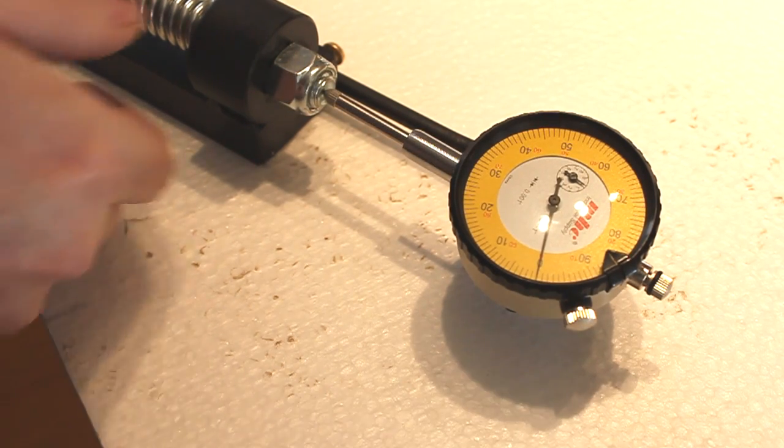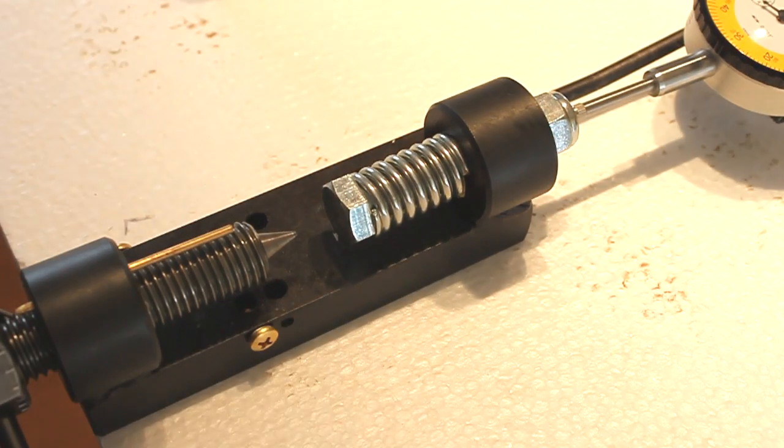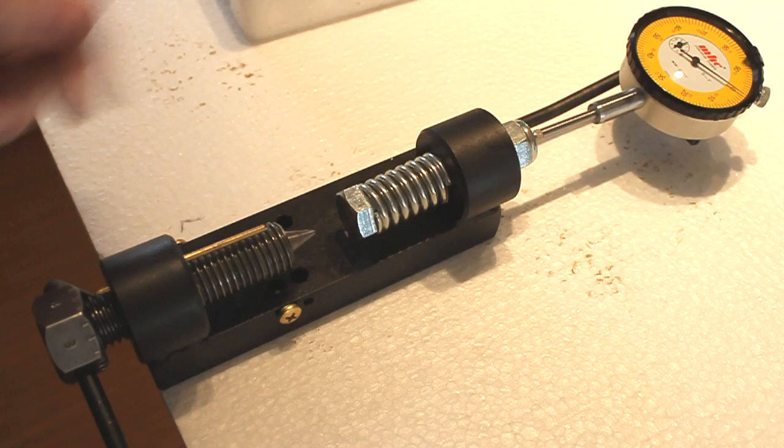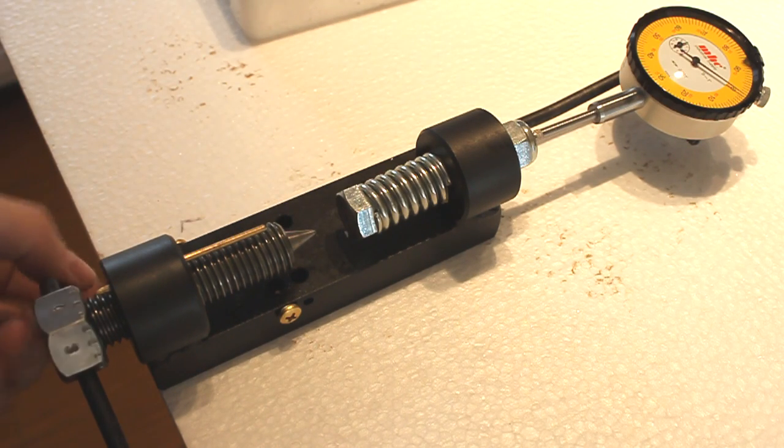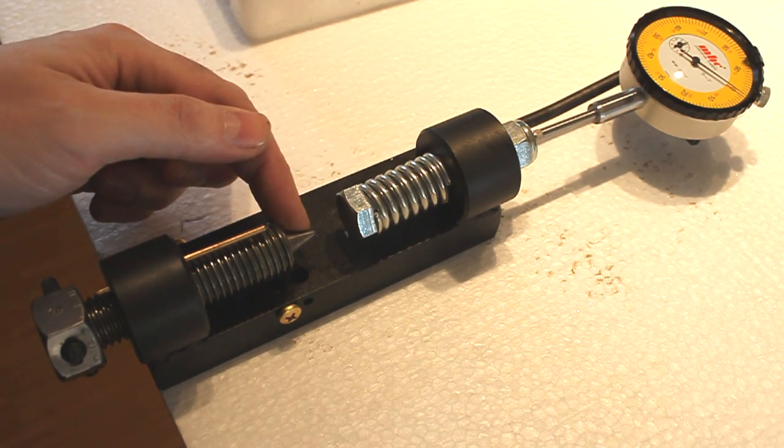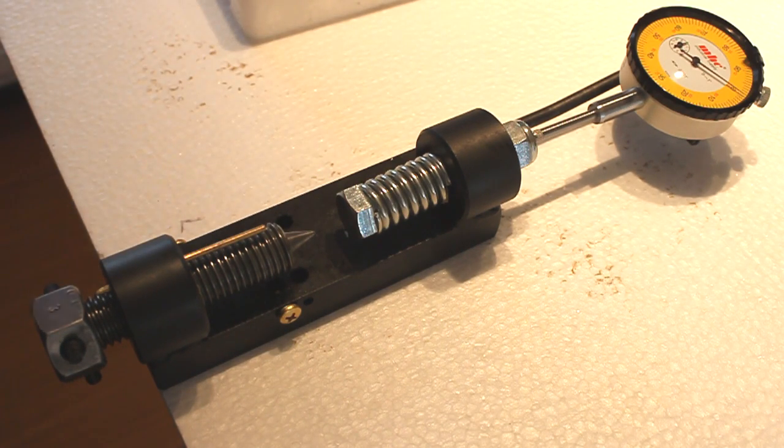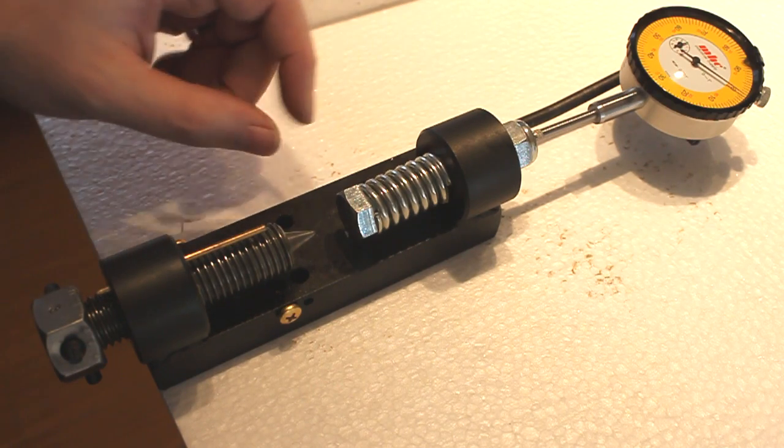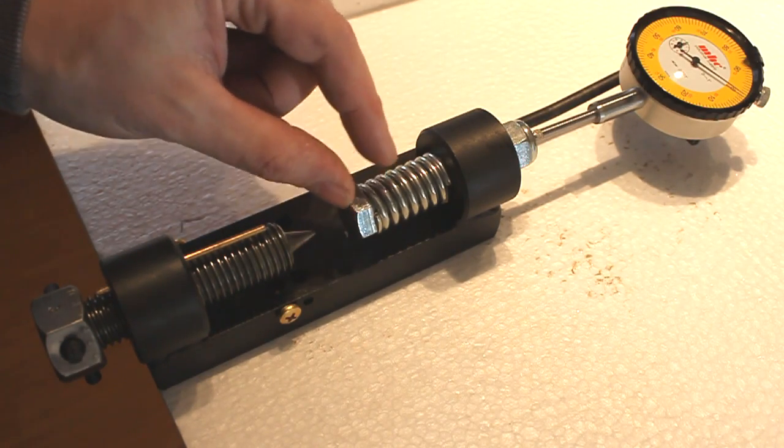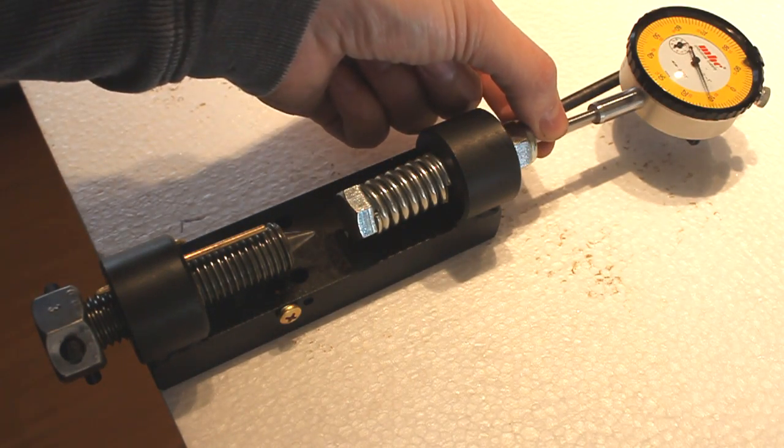So evidently the way this works is when you put your sample in here and you turn this, this point presses into the sample and it will sink in to make a depression depending on the hardness. And as a result of the force this spring and bolt will get depressed. When it's pushed it pushes on your dial indicator and takes a reading.